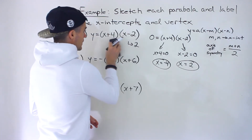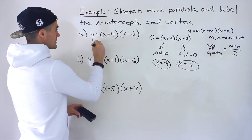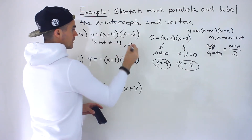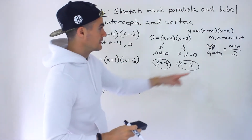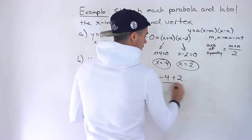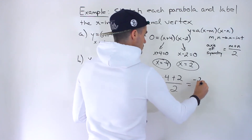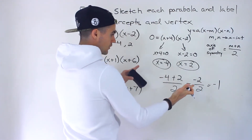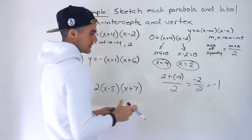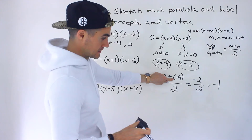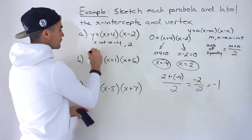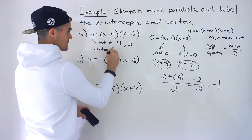So I'm going to write out the characteristics below each one. The x-intercepts are at negative 4 and 2. Now we can find the axis of symmetry, which is the midpoint between the intercepts. We add them together: negative 4 plus 2 divided by 2. Negative 4 plus 2 is negative 2, divided by 2 gives us negative 1. The order doesn't matter — 2 plus negative 4 is also negative 2, divided by 2 gives negative 1. So the vertex has an x-value of negative 1.